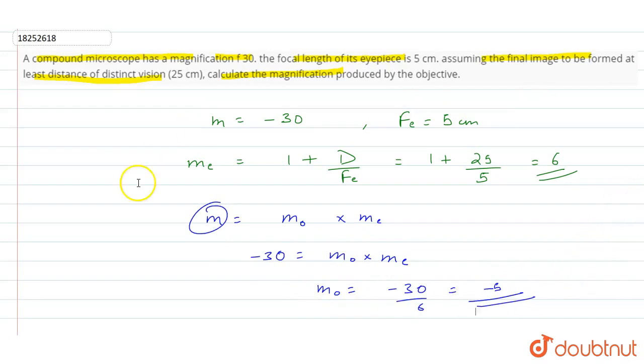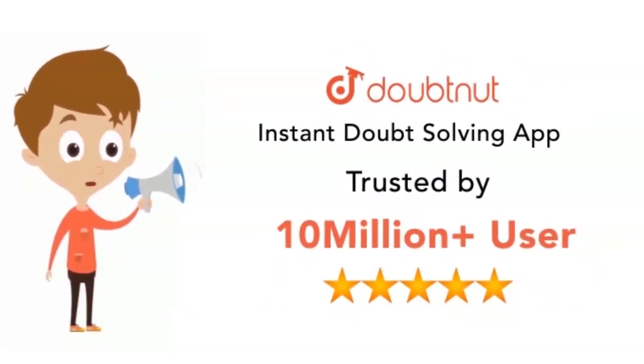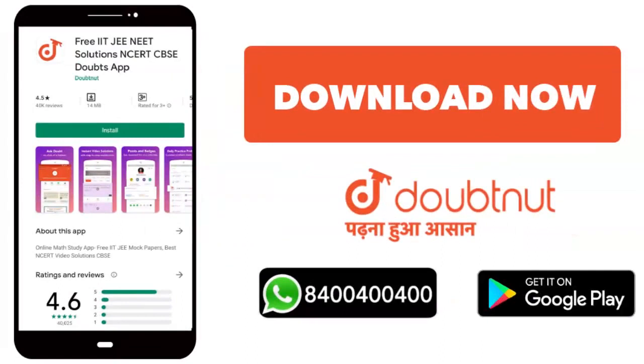So, this is our solution. From Class 6 to 12, NEET, JEE Mains and advance level. There are more than 10 million students. Today, download the Doubtnet on WhatsApp. Thank you.